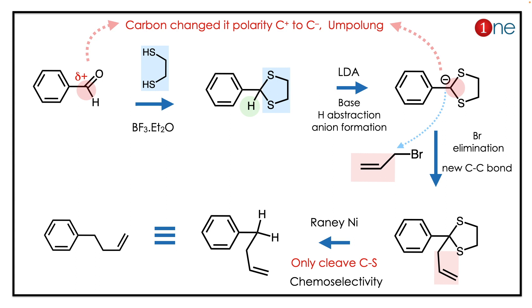Then you have an anion which is a nucleophile, which attacks the allyl bromide — you form a new C–C bond. Then you use Raney Nickel, which is selective for sulfur removal, so you end up with just a CH₂ group.